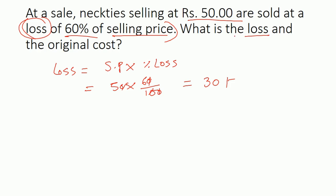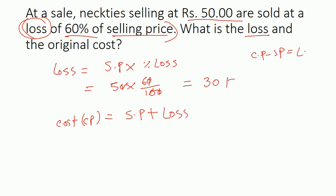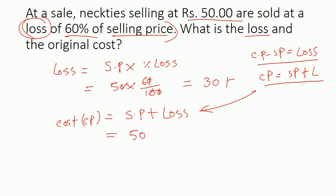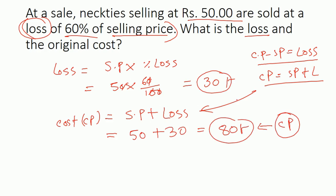The first part of the question — what is the loss — we already found: 30 rupees. The second part is the original cost. To find the original cost, we know that cost price equals selling price plus loss, because cost price minus selling price gives you loss, so you rearrange to get cost price equals selling price plus loss. The selling price is 50 and we calculated the loss as 30, so it gives us the value of 80 rupees. The cost price was 80 rupees, selling price was 50 rupees, incurring a loss of 30 — properly justified.